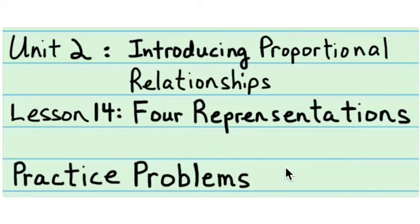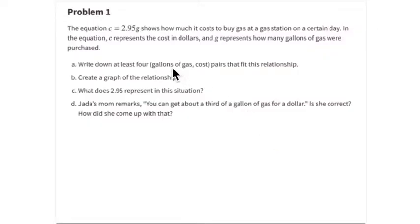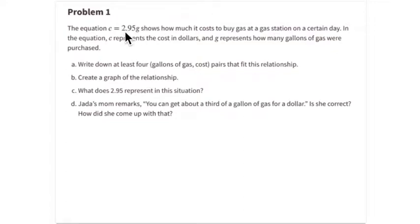This is practice problem one from lesson 14 on representations. In this problem, you're given an equation for the cost of gasoline. It says that the cost of gasoline is two dollars and ninety-five cents per gallon. So if you buy one gallon of gas it's going to cost you two dollars and ninety-five cents. You're supposed to write down at least four different amounts of gas — four different numbers of gallons — and the cost.